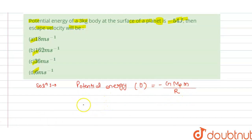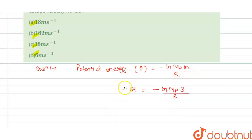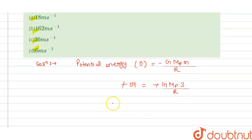The potential energy is given as minus 54 joules. Dividing by the mass 3 kg, we get: GM/R = 54/3. The negatives cancel out, giving us GM divided by R equals 54 divided by 3.